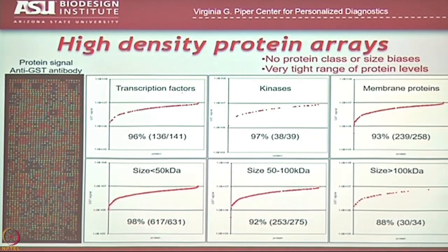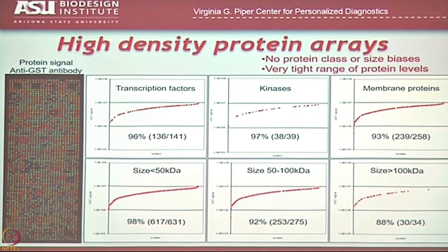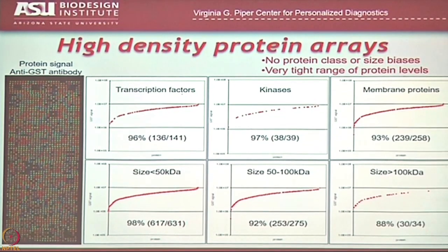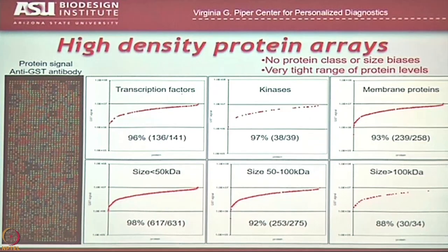Here's quantification based on different types of proteins, going from weakest to strongest expression. Roughly speaking, about 97 percent of whatever we print, we can get good expression of: 96 percent of transcription factors were detectable, 97 percent of kinases, membrane proteins are very detectable, and small, medium, and large proteins are all detectable. Occasionally we'll run into proteins that have unusual amino acid sequences that make it difficult to get high yield, but that is by far the exception.